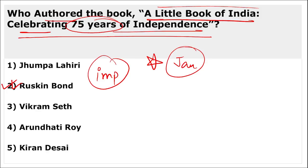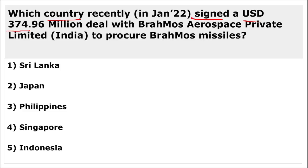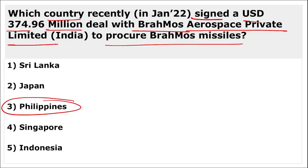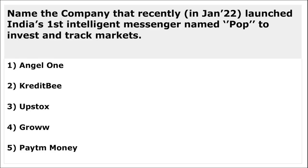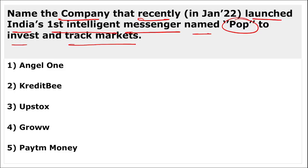Philippines recently signed a $375 million dollar deal with BrahMos Aerospace Private Limited to procure the BrahMos missile. Remember, BrahMos is a joint venture between India and Russia. The company that launched India's first intelligent messenger named 'Pop' to invest and track market was Paytm Money.